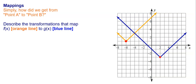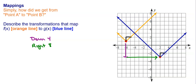So to go from the orange line to the blue line, we're first going to have to go down four, and then we're going to have to go to the right eight. The blue line did not flip when compared to the orange line, and the size didn't change — going up one from the vertex and over one puts us on both graphs. So simply, to go from the orange one to the blue one, the transformations are down four and right eight.